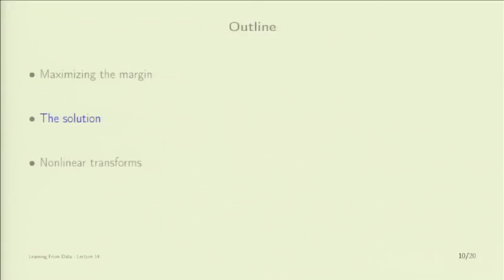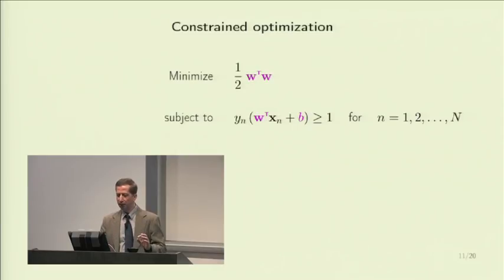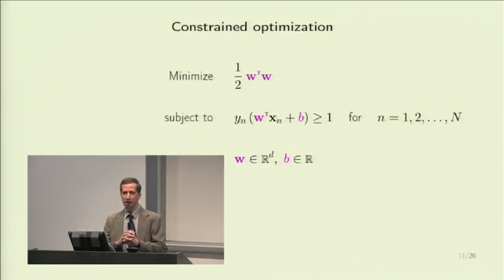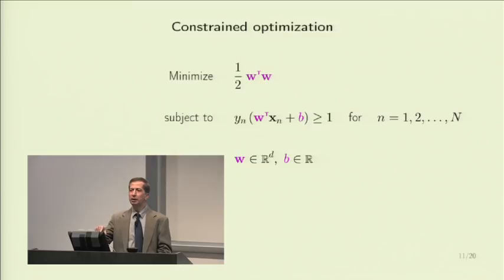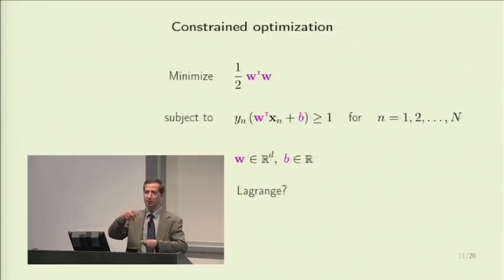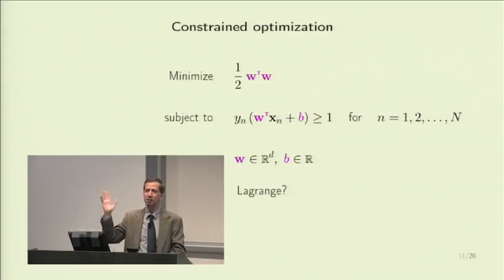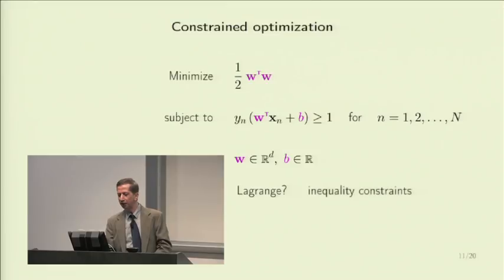Formally, the constrained optimization minimizes (1/2) W transpose W subject to y_n(W transpose X_N + B) ≥ 1 for all n, with W in R^d and B a real scalar. When you have a constrained optimization, we will need to go an analytic route. We are going to ask ourselves: constrained optimization — I heard of Lagrange. You form a Lagrangian, the constraints become unconstrained, and you get multipliers lambda. This is essentially what we got in regularization before. The problem here is that the constraints are inequality constraints, not equality constraints — but just a little different, because you can introduce a slack variable S squared to make them equalities and then solve the standard Lagrangian.